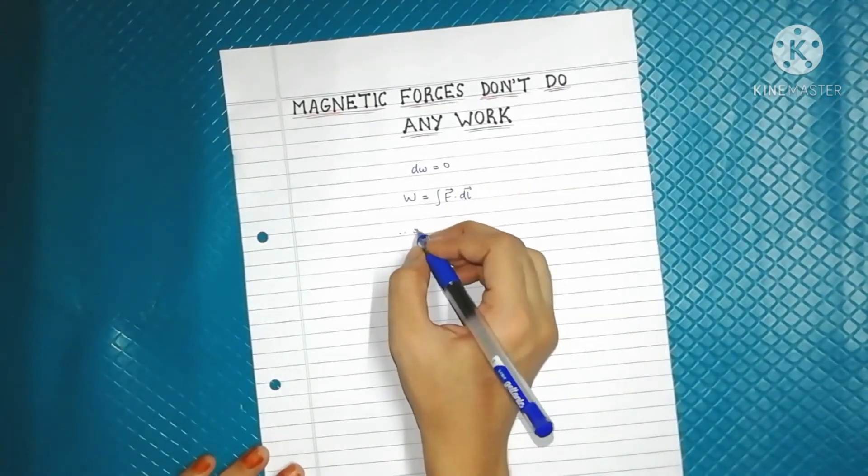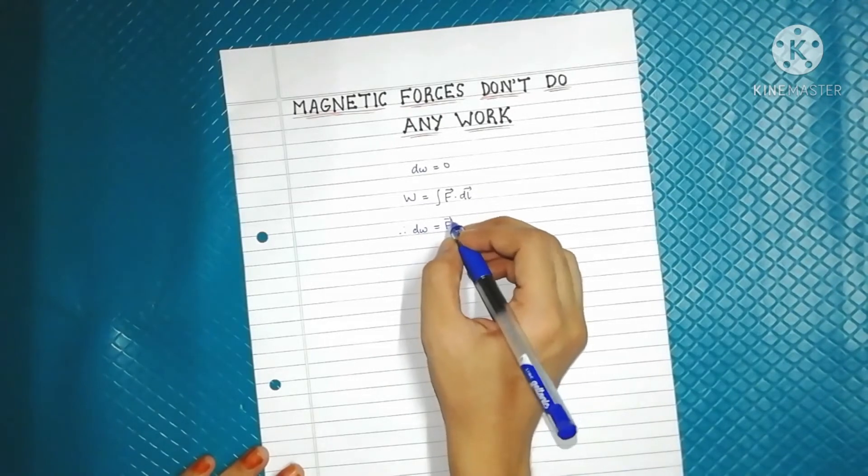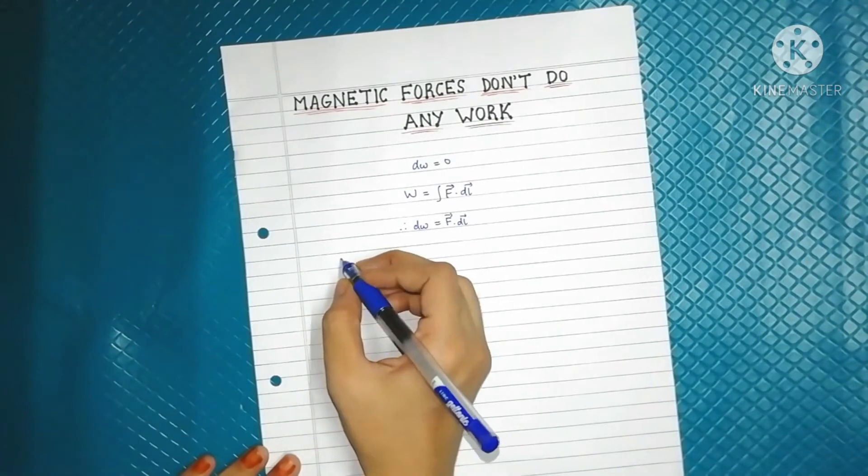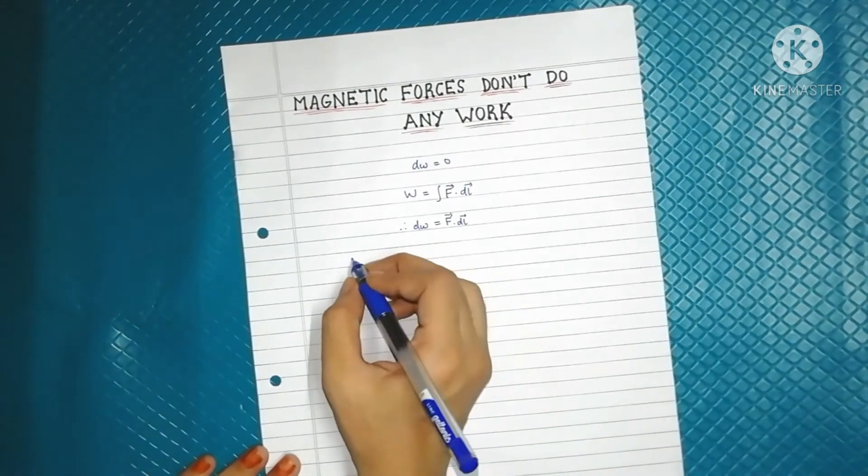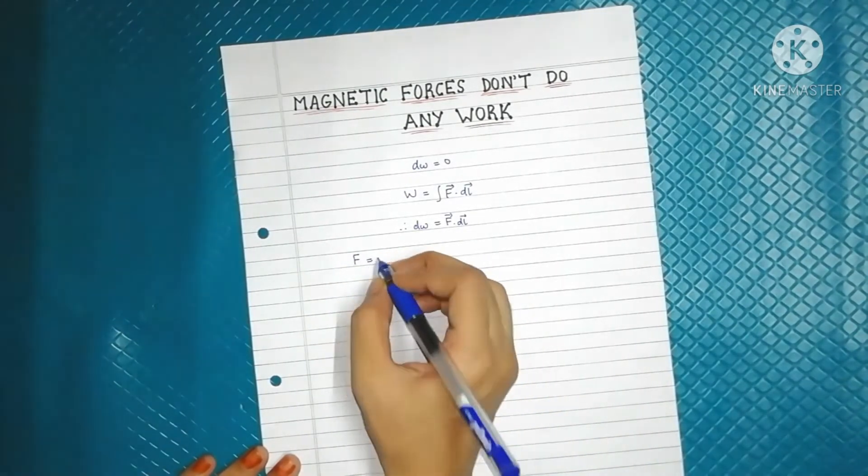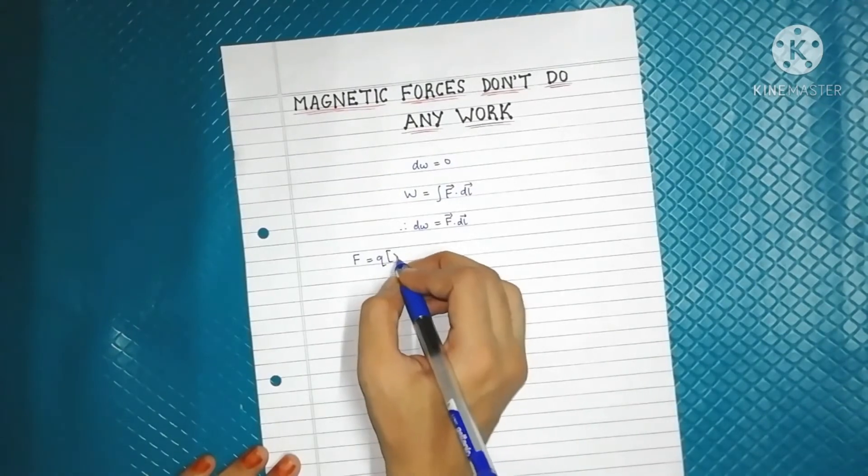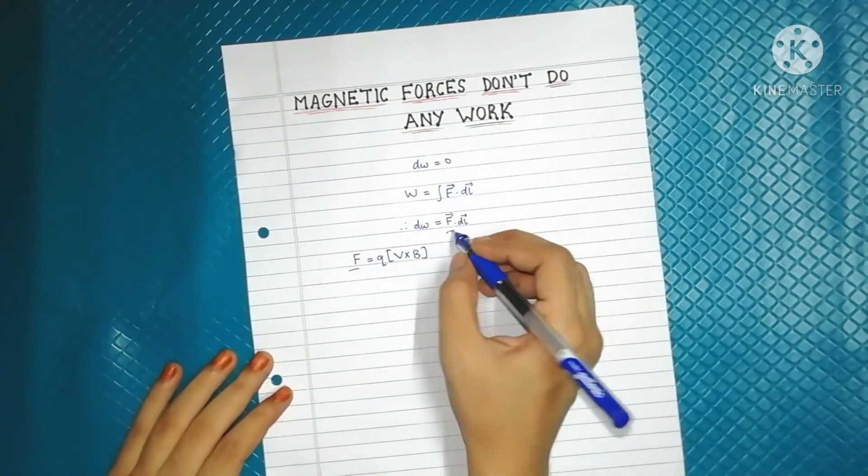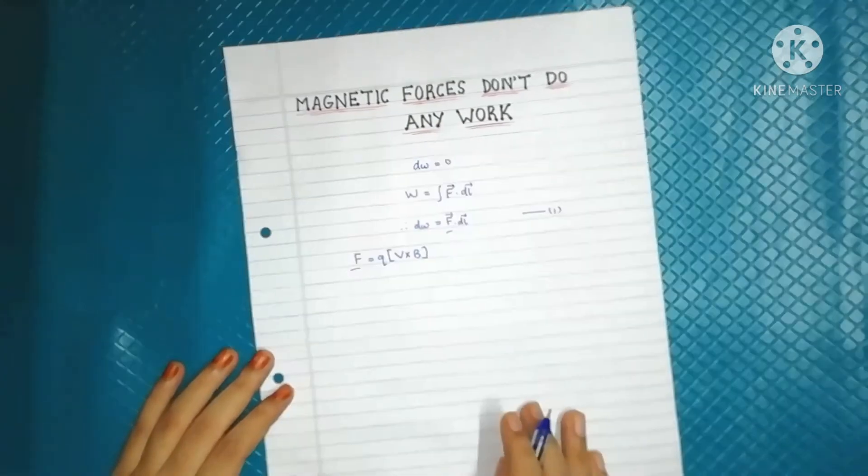Thus in terms of dW, it could be written as F dot dl. Now the magnetic force is given as F is equal to q into v cross B. We have the value of F, we will substitute this in equation number one.